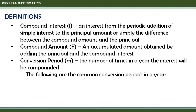The following are the common conversion periods in a year. If it is annually, then M is equal to 1, meaning the interest is compounded once a year. Semi-annually, M equals 2, meaning the interest is compounded twice a year.